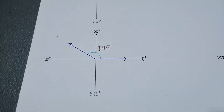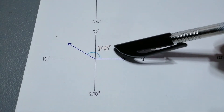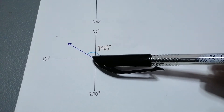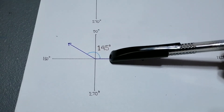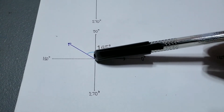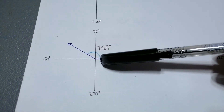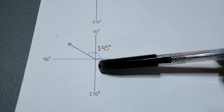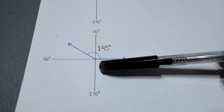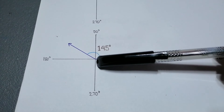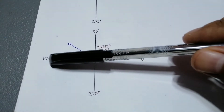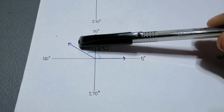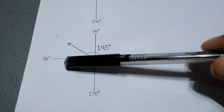For our next example, we have here an angle that measures 145 degrees. This is our initial side and this is the terminal side, and it measures 145 degrees. This is a positive angle wherein our terminal side is in the second quadrant. To determine the reference angle of 145 degrees, we simply look at the acute angle formed by our terminal side and the x-axis. We can see that our terminal side is forming an acute angle with respect to the negative x-axis.